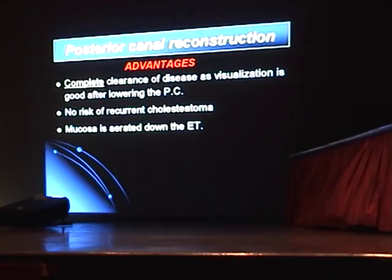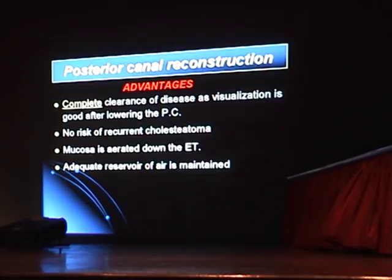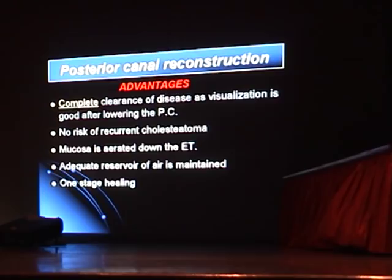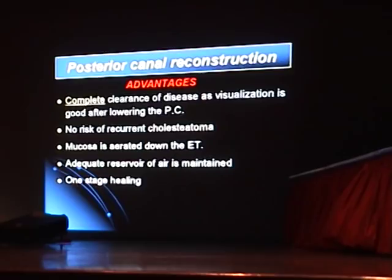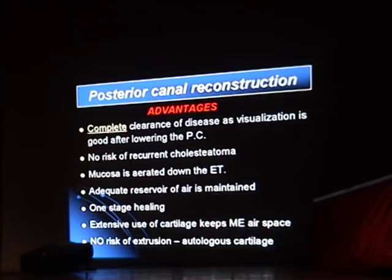An adequate reserve of air is maintained — obliteration leaves no air reserve, whereas a reconstructed posterior wall retains a good air reserve. One-shot healing is achieved: the patient can travel the next day and is seen again at six weeks, fully healed. Extensive use of cartilage maintains the middle ear air space with no risk of extrusion, since the patient's own cartilage is used rather than titanium or gold.